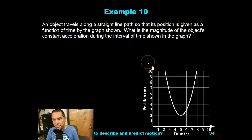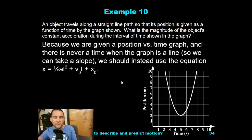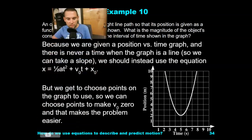Object traveling along a straight line path so its position is given as a function of time by the graph below. Checking again its position and time. What is the magnitude of the object's constant acceleration during the interval of time on the graph? We're given a position time graph and there's never a time when the graph is a line, so we can take a slope. Instead, we're going to use the equation x equals 1 half at squared plus v naught t plus x naught. But we do get to choose points on the graph to use, so we can choose the points that make the initial velocity 0. So that will make the problem quite a bit easier because we can remove this term entirely.